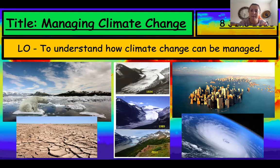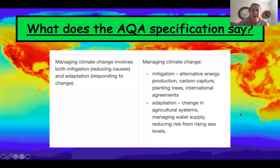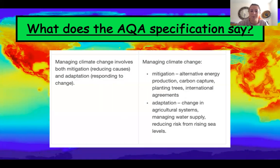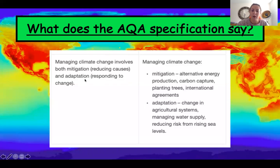Our title is Managing Climate Change. First of all, I thought we'd link it to the AQA specification like we've done for most of our lessons. We're at the very last bit now of this first topic, which is Managing Climate Change. I'm going to look at two ways that we can manage climate change: mitigation, which is reducing the causes of climate change, and adaptation, which is how we respond to the changes caused by climate change. I'm going to look at strategies for both mitigation and adaptation.